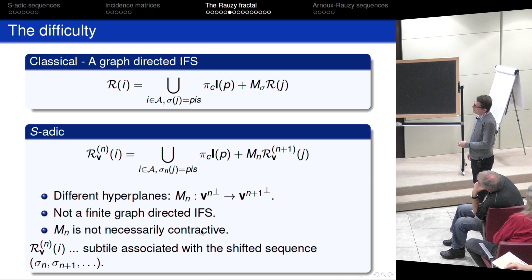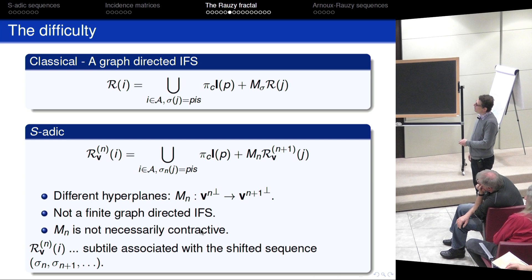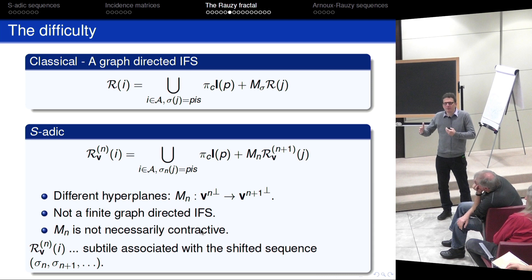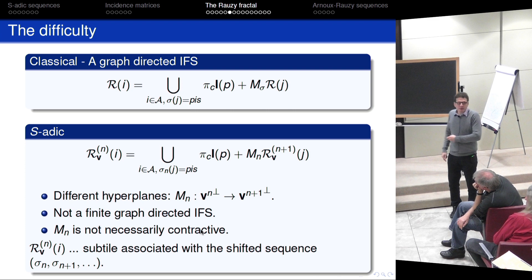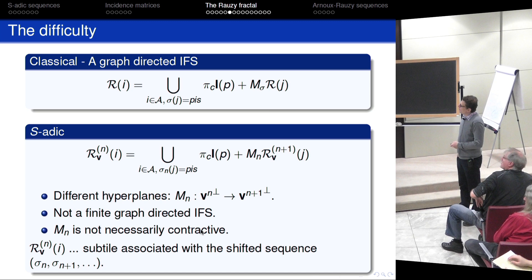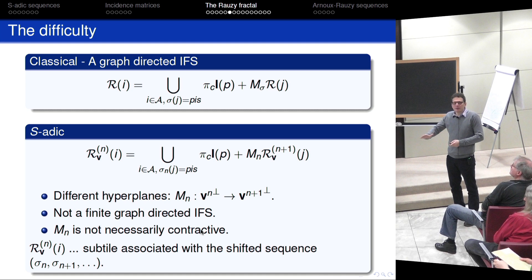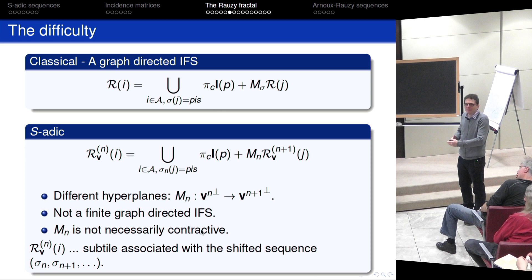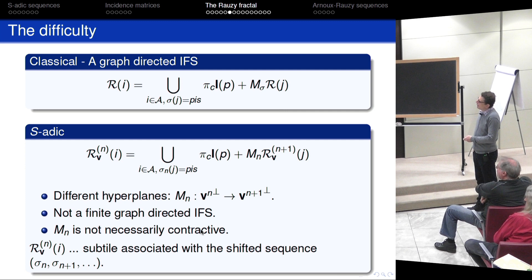In our case we have a problem. You can subdivide the Rauzy fractal into translations of smaller copies of Rauzy fractals again, but here — notice the index N versus N+1 — if I start with Rauzy fractals associated with the sequence sigma_0, sigma_1, sigma_2, I get Rauzy fractals associated with the shifted sequence. Self-affinity is destroyed. Moreover, these matrices are contractions on the hyperplanes only eventually by our Pisot conditions. Also, these Rauzy fractals live in a different hyperplane than those, so many things break down and we must be careful.